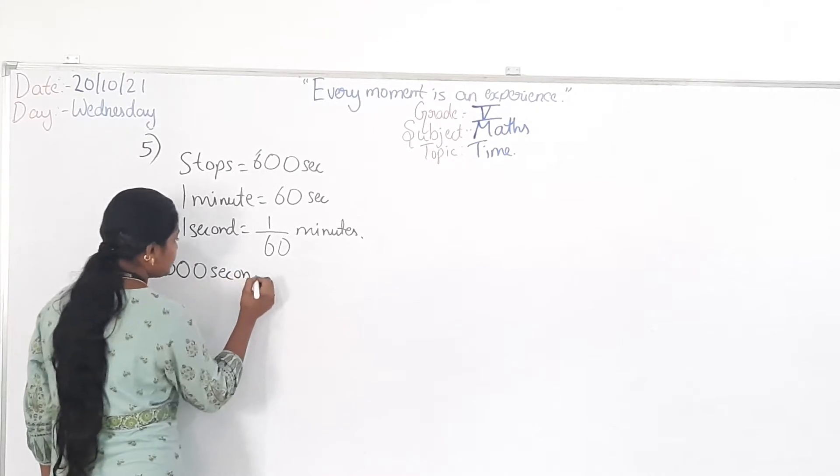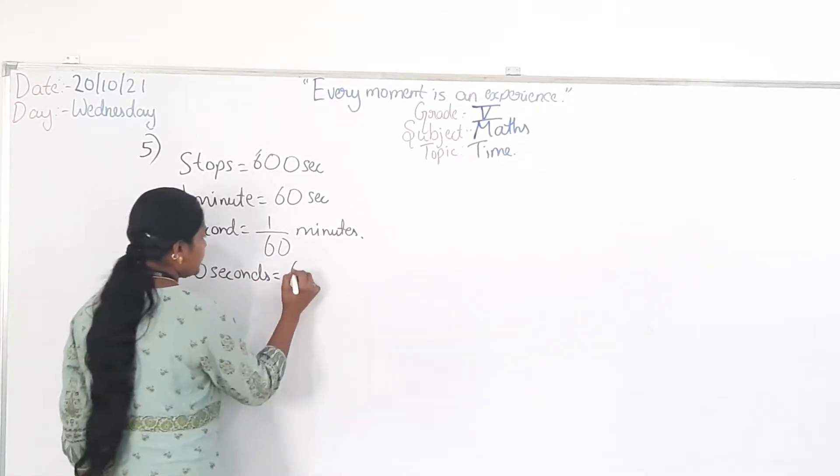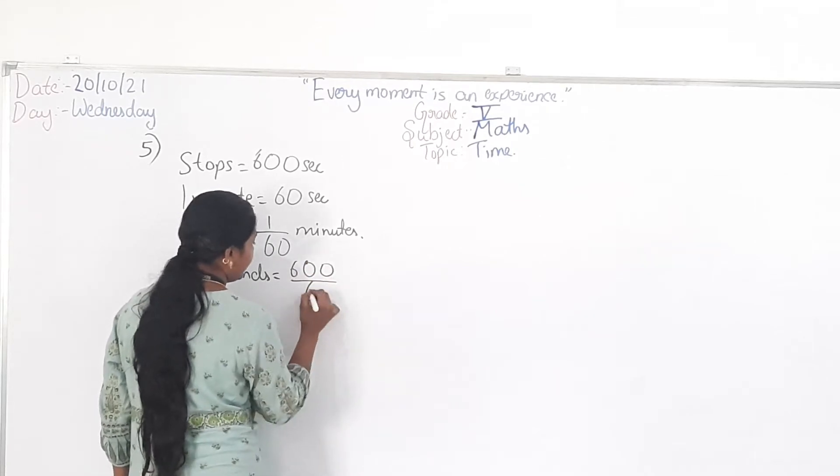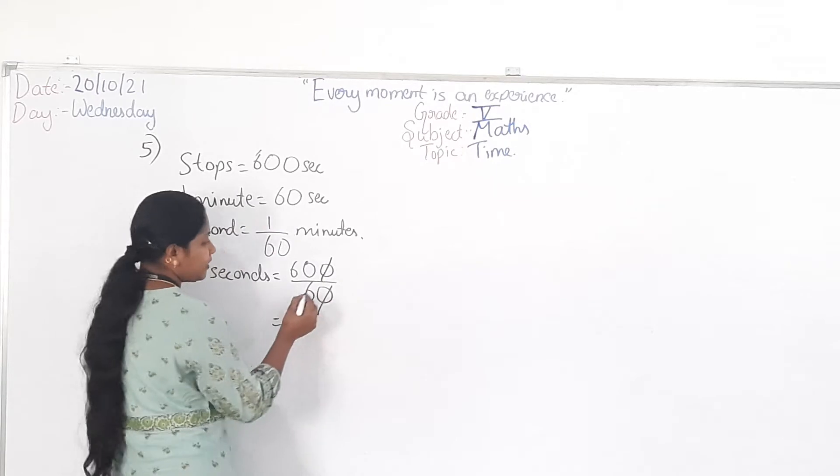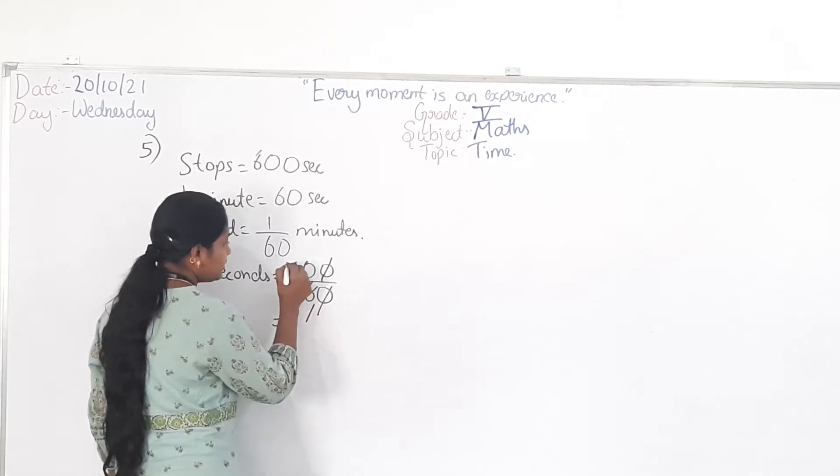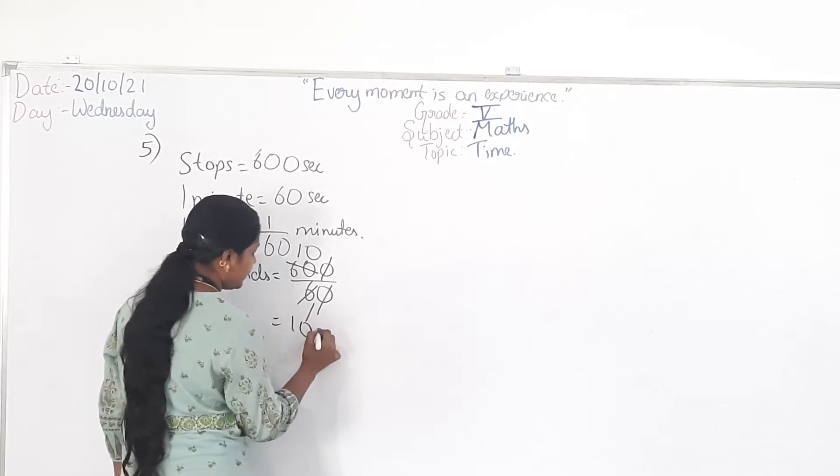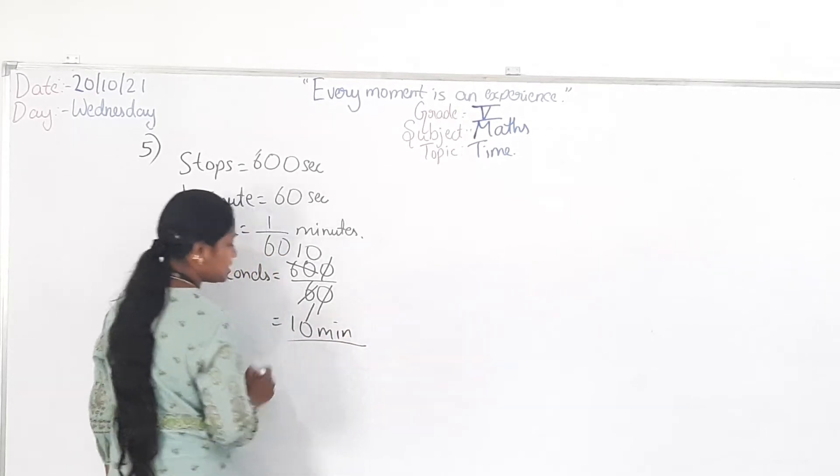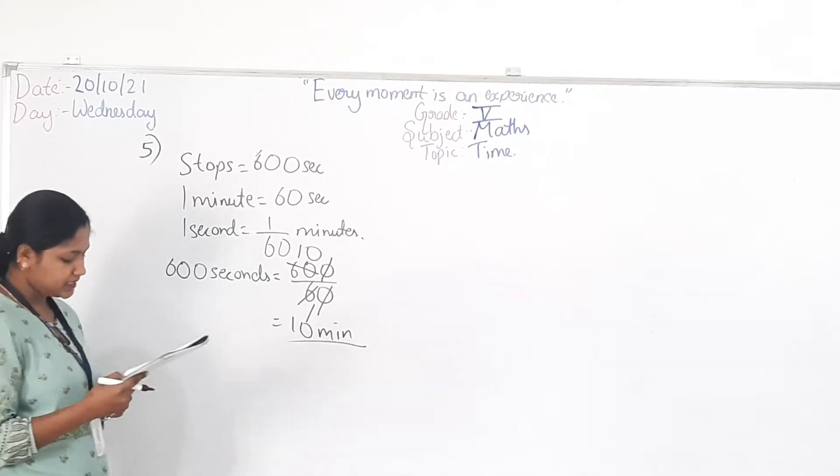So you cancel 1 by 0 here. Then 6 ones up, 6 tens up. So how many minutes? It is 10 minutes is the answer. Got it? Then see example 6.